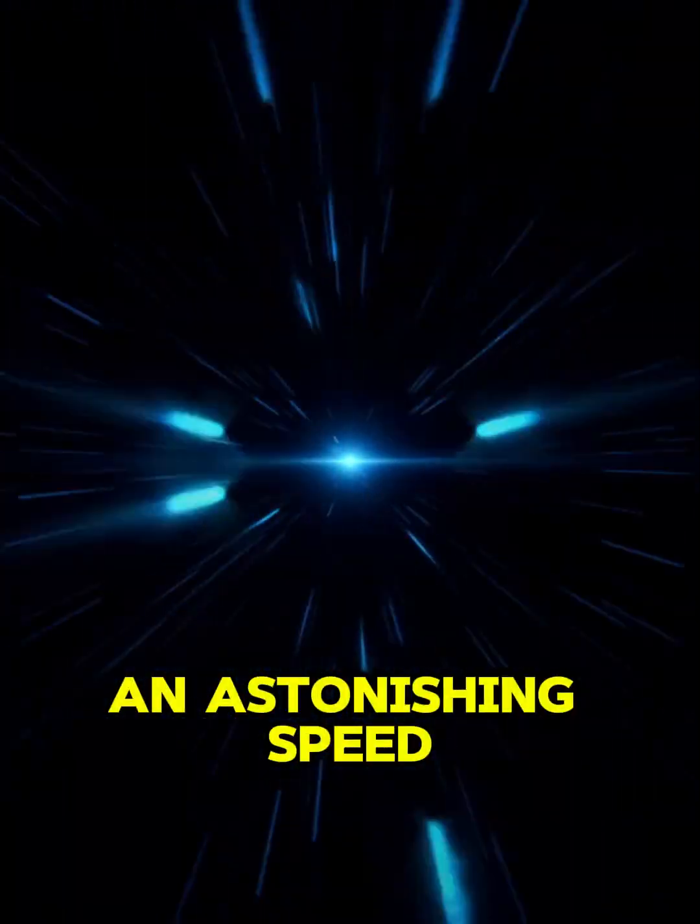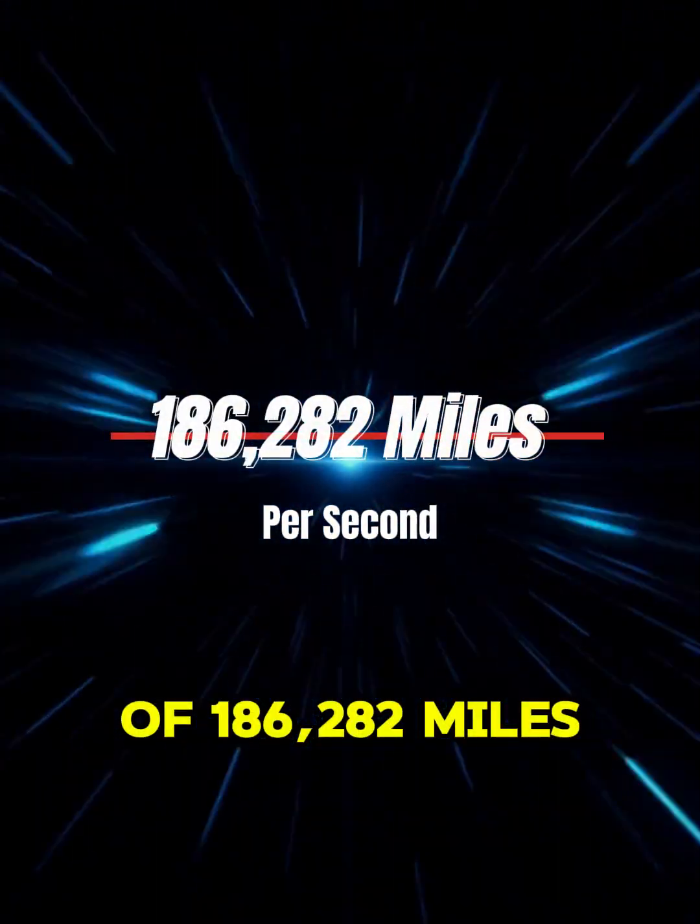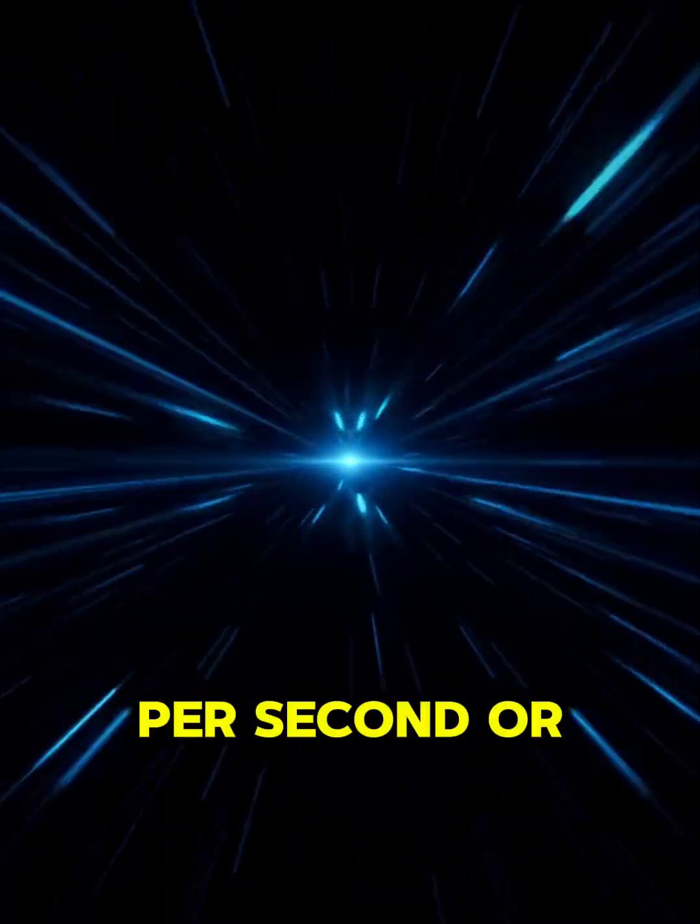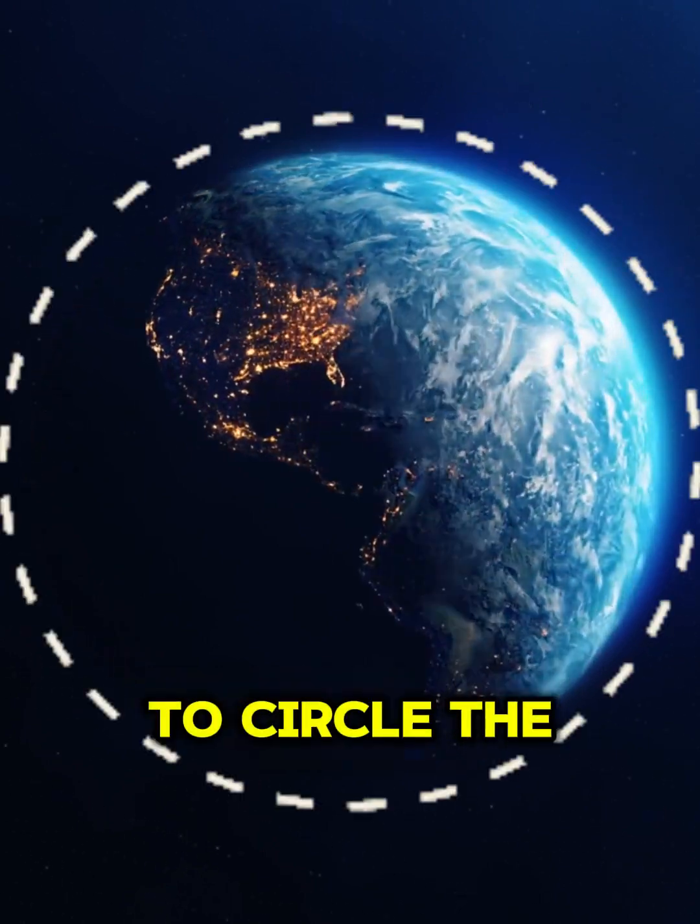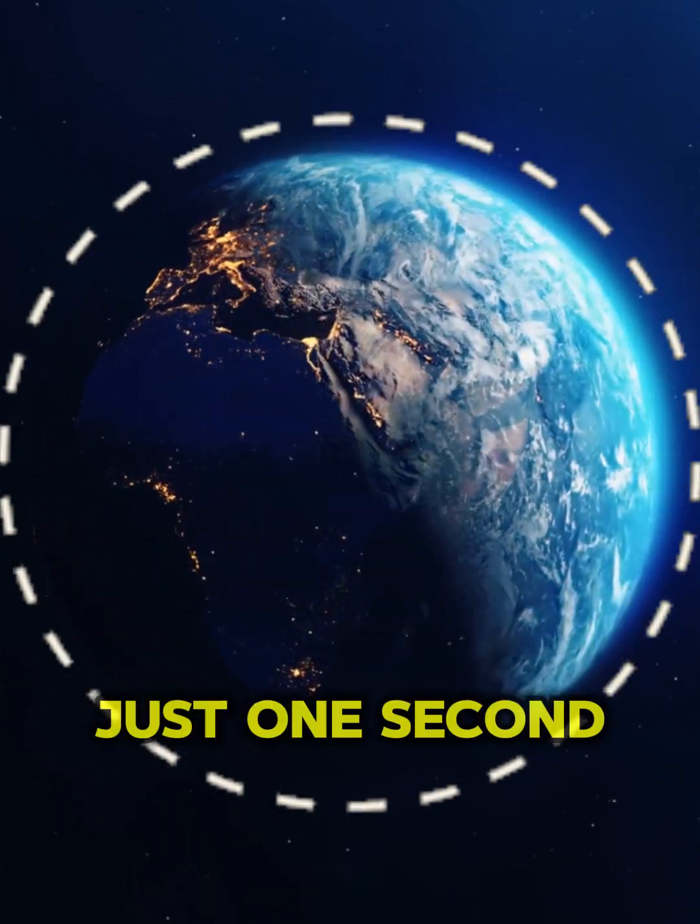Light travels at an astonishing speed of 186,282 miles per second or 299,792 kilometers per second. That's fast enough to circle the Earth 7.5 times in just one second.